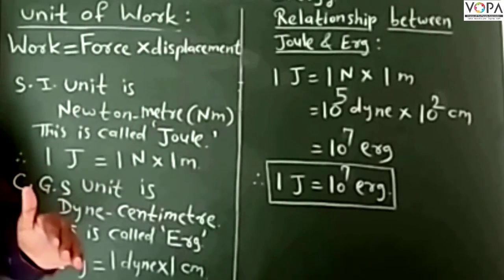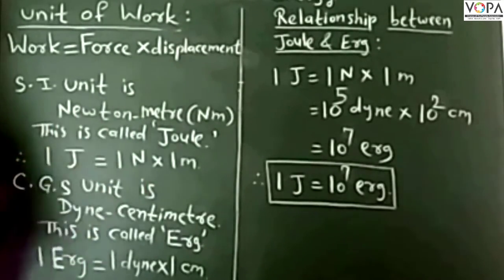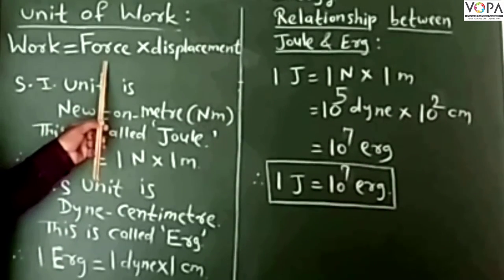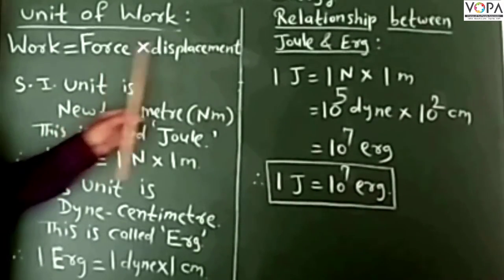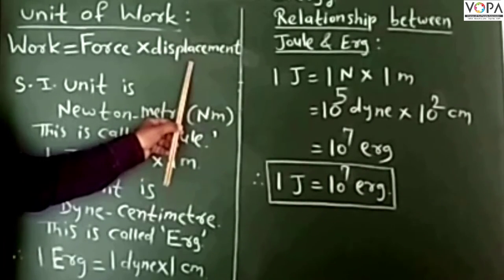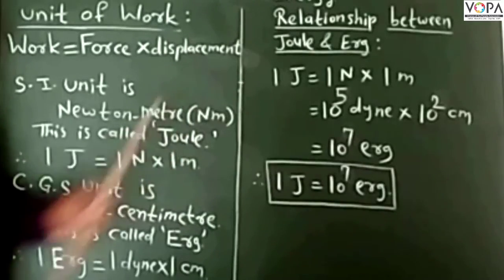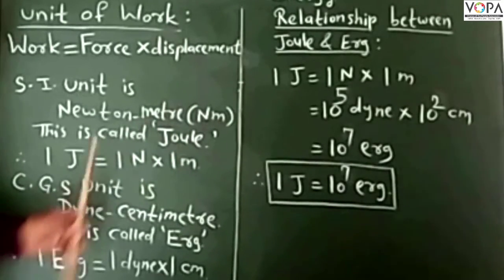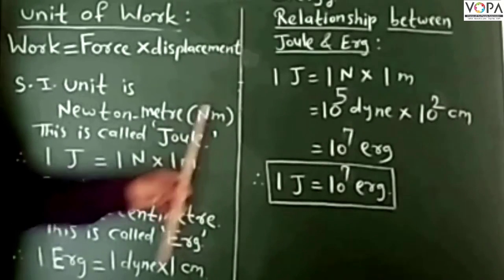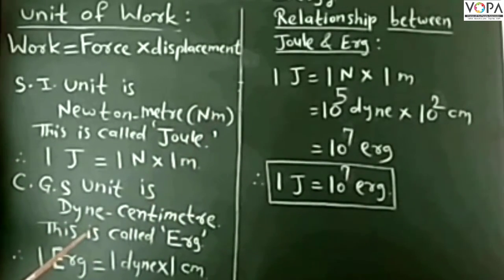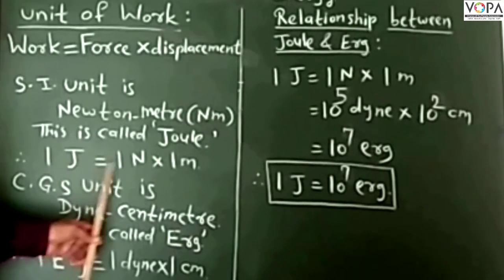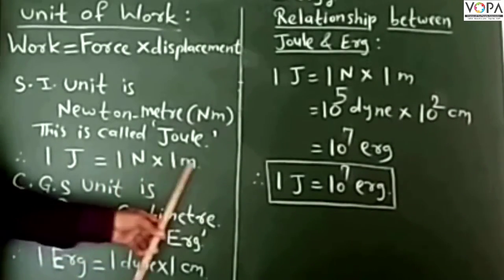Now let us write the SI unit and CGS unit of work. The SI unit of force is Newton, denoted as N, and the SI unit of displacement is meter, denoted as m. So the SI unit of work is Newton-meter, denoted by Nm.